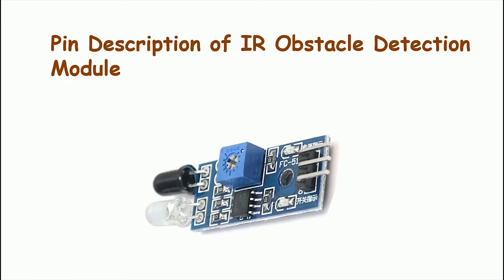Now let's explore all the components of the IR module. First of all, there is an IR emitter LED which looks the same as other normal LEDs — it emits IR radiations. These radiations are received back by the black-colored IR receiver. There are three main connection pins: the first one is VCC, through which the module is powered, most commonly using the Arduino board. The second pin is the ground pin, directly connected to the ground pin of Arduino. The third is the OUT pin, which sends a digital output to the Arduino board — either high or low. The output goes low whenever there is an obstacle in front of the sensor; otherwise it remains high.